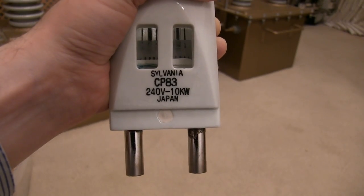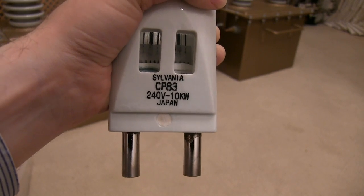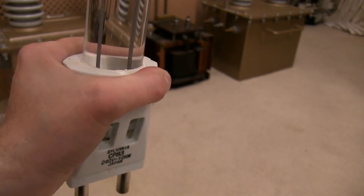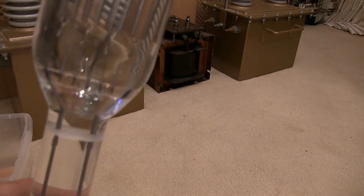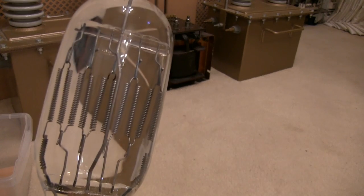This is the base of the lamp. It's a G38 biopin, and these are halogen lamps so you definitely shouldn't touch it with your hands. If you do, you need to wipe it with alcohol.